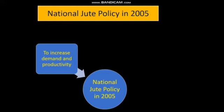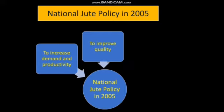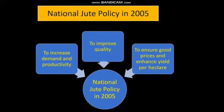In 2005, the National Jute Policy was formulated with the objective of increasing demand and productivity, improving quality, ensuring good prices for farmers, and enhancing yield per hectare.